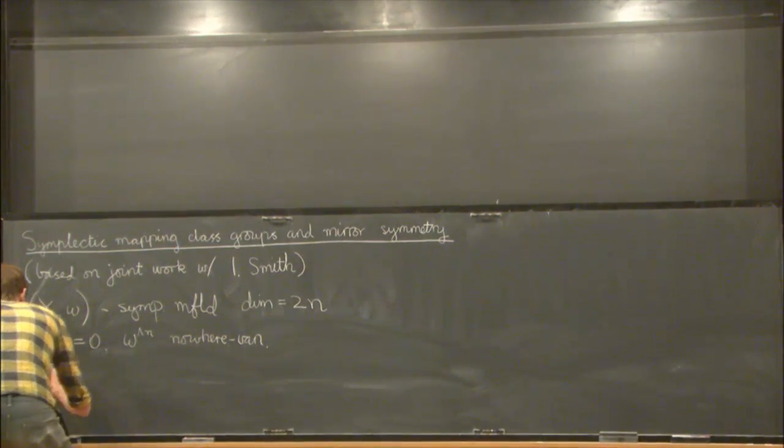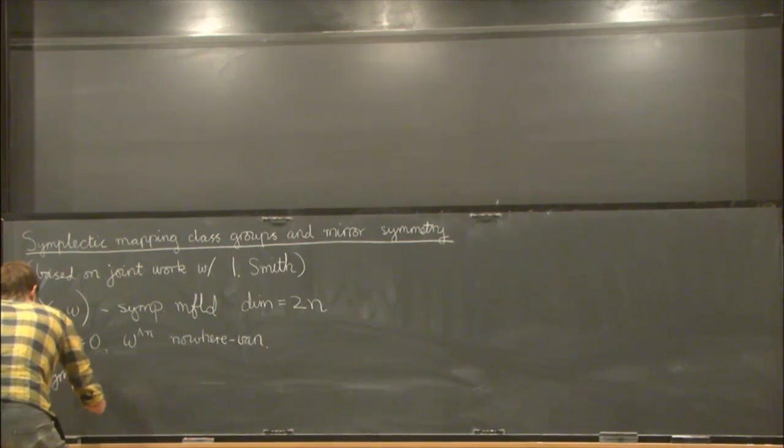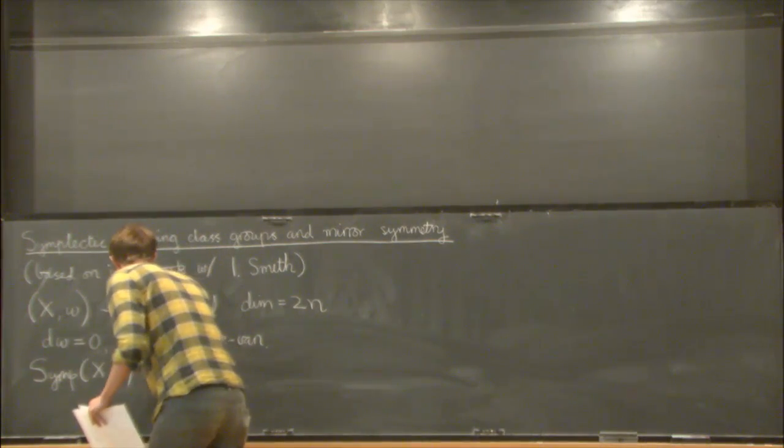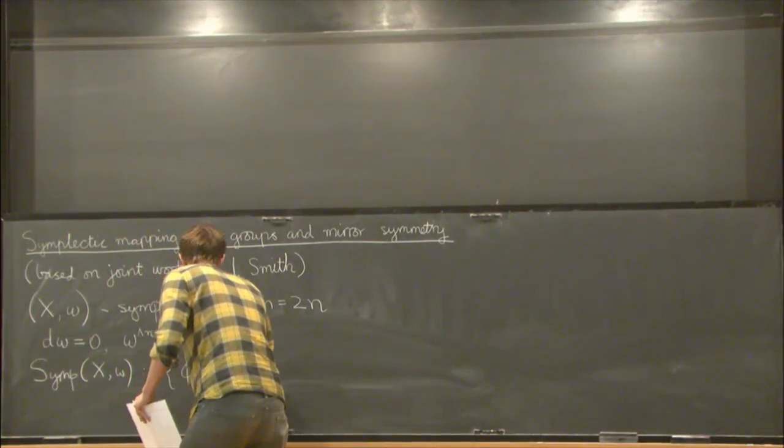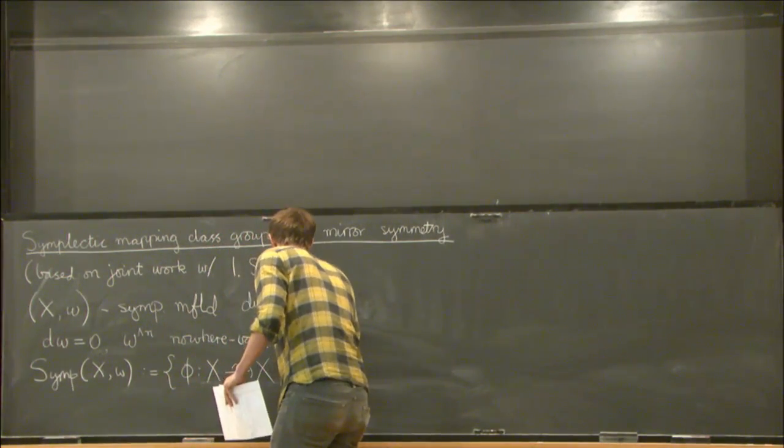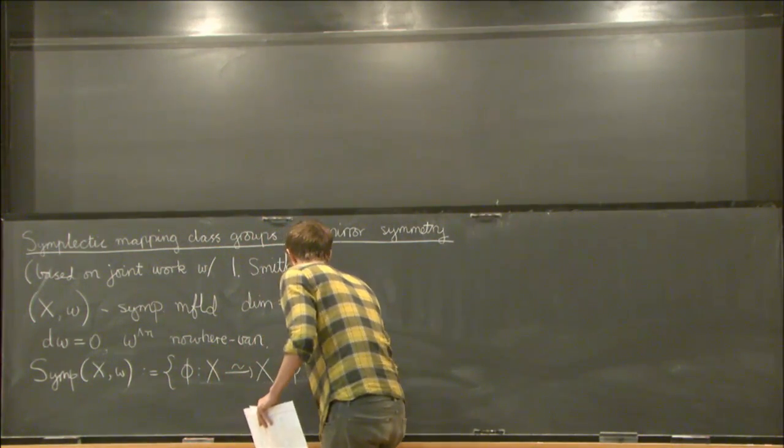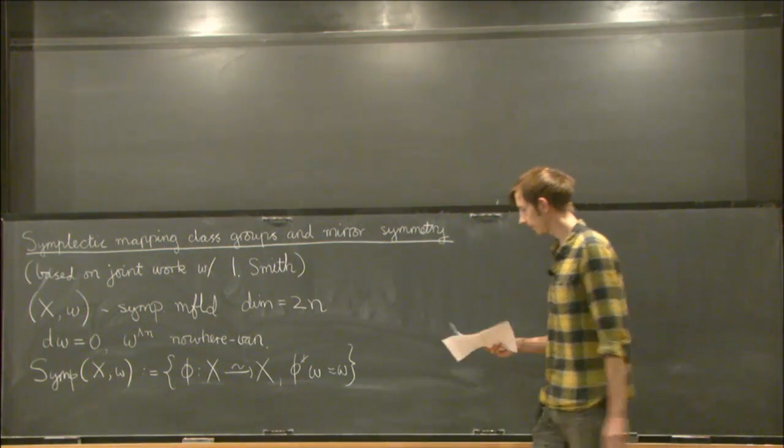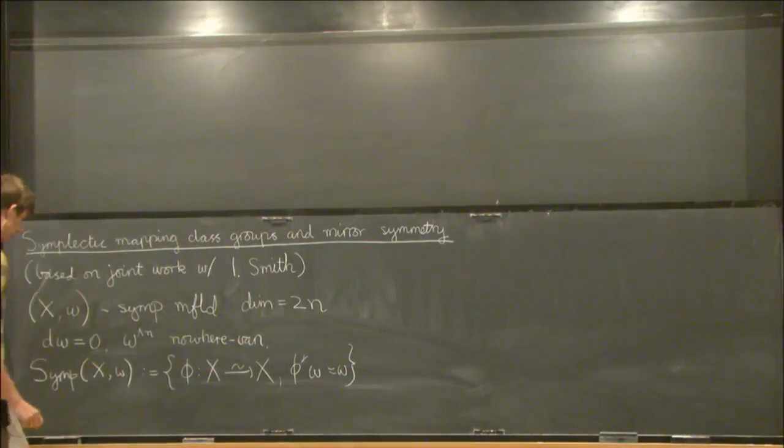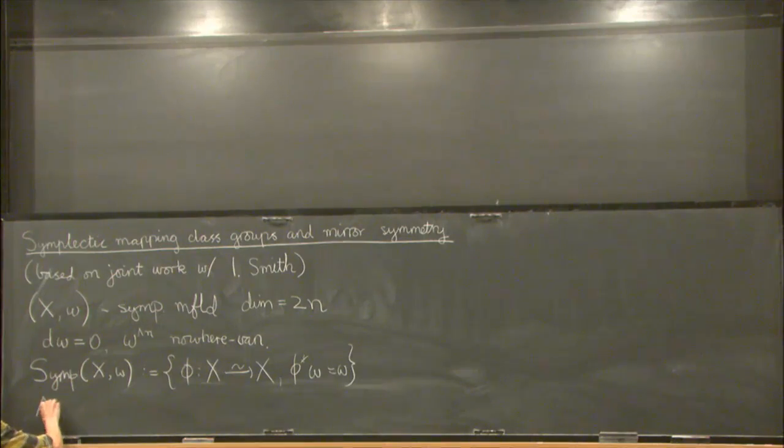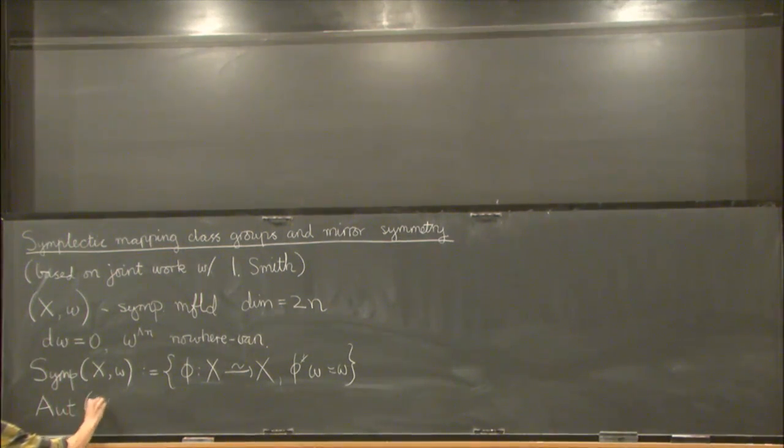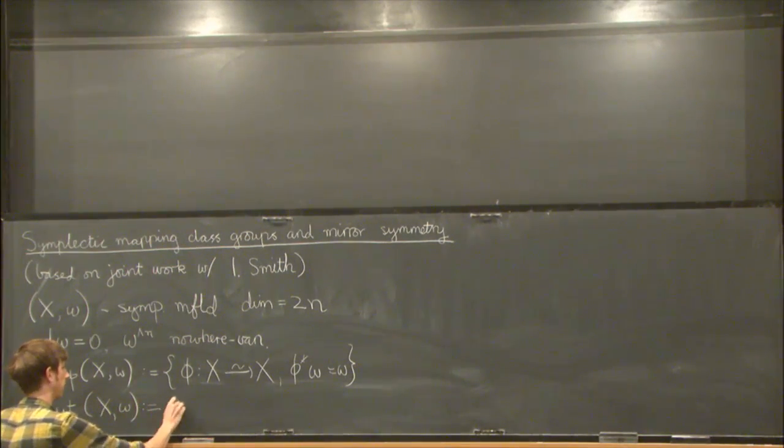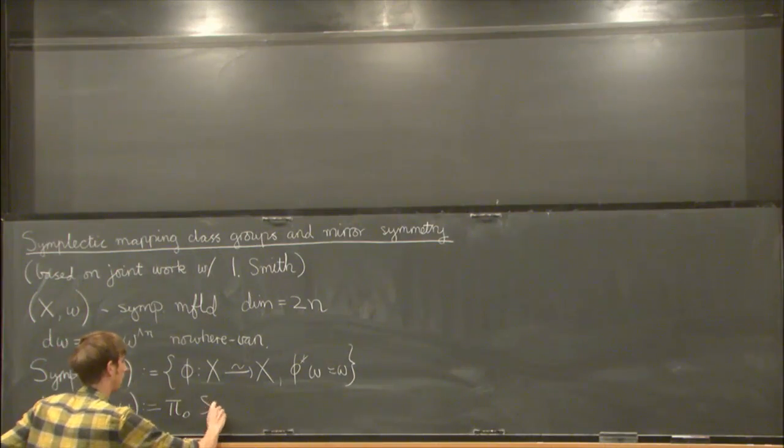And we're going to study a similar object to what appeared in Sorbonne's talk: diffeomorphisms from X to itself that preserve the symplectic form. This is a topological group. And I'm going to denote the symplectic mapping class group like this. I'm gonna call it ought, just because that's the main thing we'll end up talking about.